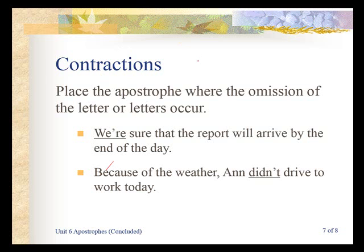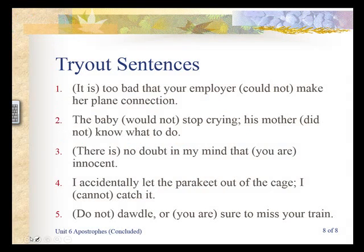Next we'll talk about contractions, and that'll wrap up our apostrophes. When using contractions, place the apostrophe where the omission of the letter or letters occurs. For example: 'we are' — we drop the A and put the apostrophe in its place — 'we're sure that the report will arrive by the end of the day.' 'Ann didn't drive to work today' — we dropped the O, so that's where the apostrophe goes. 'It's too bad' — we drop the I from 'it is' and place the apostrophe there.